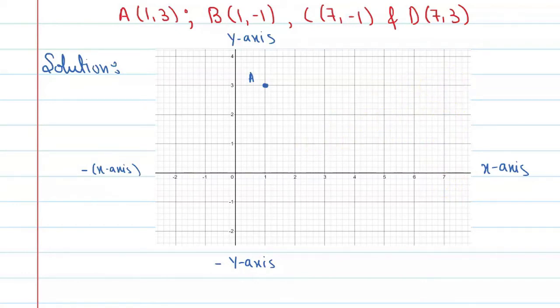So students, these are the points. This is the A point and this is the B point. And this is the C point, that is x=7, y=-1. So here we have C point. Now I will write coordinates. That is A, B, C, and this point is D.